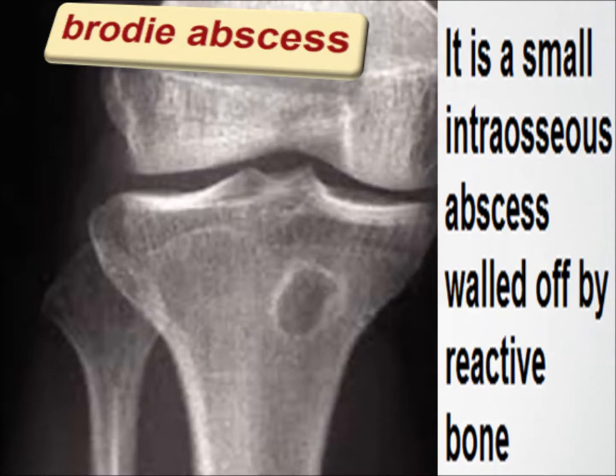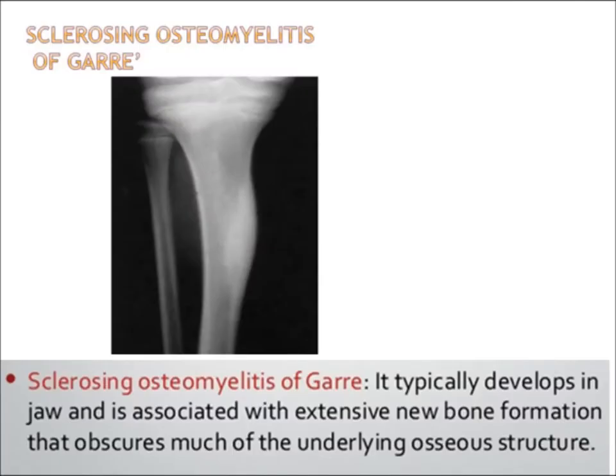Brodie abscess is another feature of the chronic stage — it is a small intraosseous abscess walled off by reactive bone. A second manifestation is sclerosing osteomyelitis of Garré, which typically develops in the jaw and is associated with extensive new bone formation that obscures much of the underlying osseous structure.